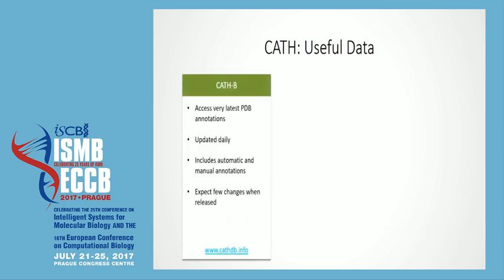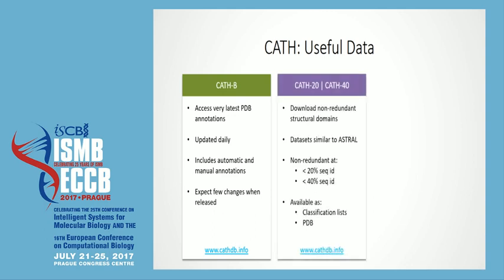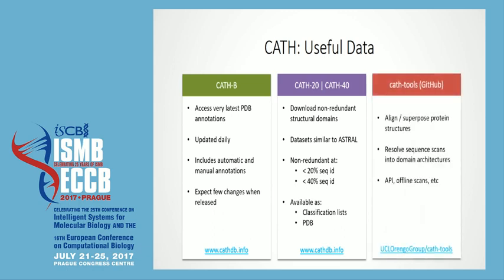To summarise some of the stuff you might be interested in: I've already mentioned CATHB. Generally speaking, on a practical level, there are very few changes between what gets assigned in CATHB and what gets assigned in a frozen release, so they're pretty safe to use. We also provide non-redundant data sets if you want to benchmark your own algorithms or studies — similar to Astral, if people are familiar with that — available as classification lists and PDB sets. And a lot of our tools, visualisation tools and algorithms, we're porting over to GitHub, including aligning and superposing protein structures, resolving sequence scans into domain architectures.